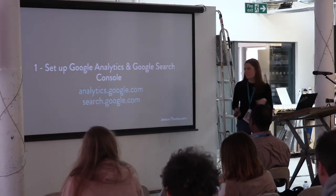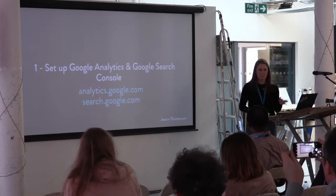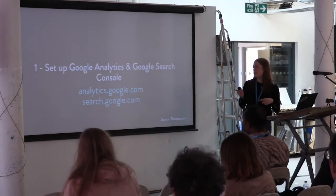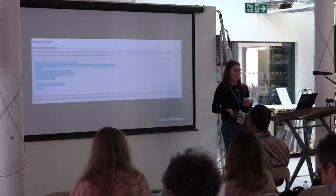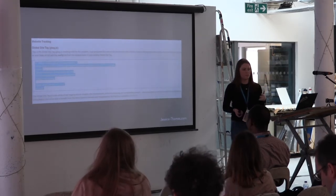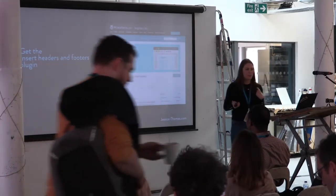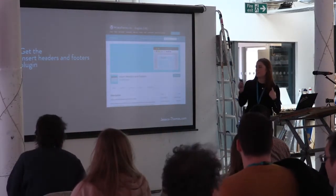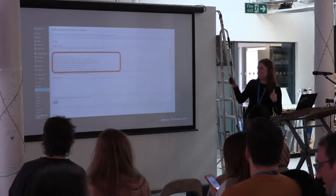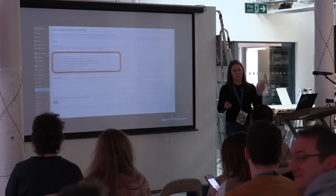Step one is really basic: set up your Google Analytics and Google Search Console. These are two really great free tools where you can monitor your website traffic. When you visit those URLs, you'll be guided through a setup process and given some tracking code. Just copy and paste this tracking code into your WordPress website — I personally find the easiest way is by using the Insert Headers and Footers plugin. Once installed and activated, go to the Settings section, under Insert Headers and Footers, and copy your tracking code into the header. From that point forward, you can start to analyse your website traffic.